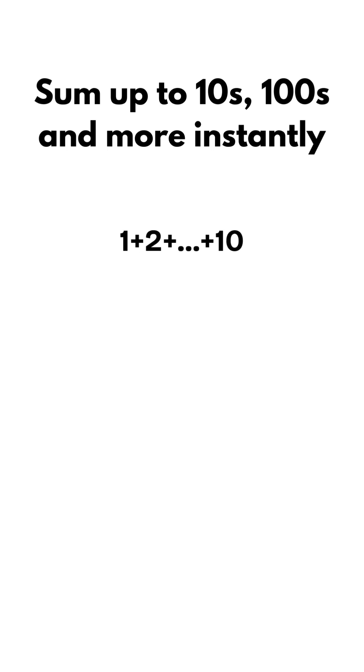Let's take an example. Add 1 plus 2 plus all the way up to 10. You don't need to sum them up manually. Take 10, divide it by 2. We will get 5. Now add another 5 on the side to it. That's 55. 55 is the sum of 1 plus 2 plus all the way up to 10.